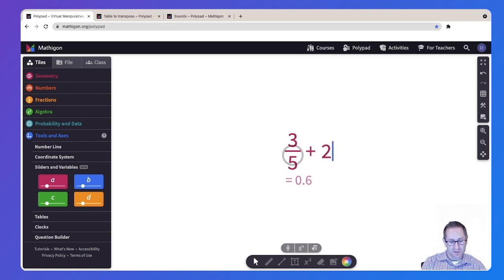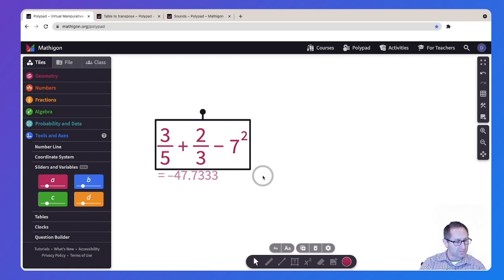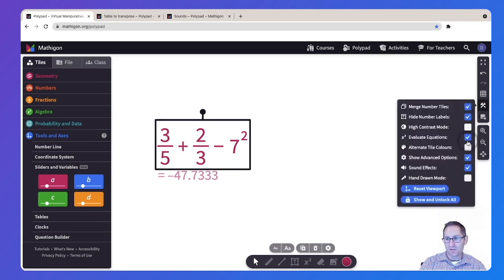I could add some other operations onto this. Three fifths plus two thirds minus seven squared. And it'll continue to update the value of that expression, which is a nice convenient feature to have as well. You can turn that on and off again right under the settings menu.